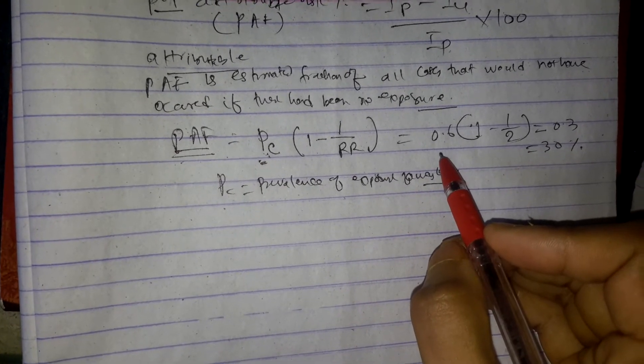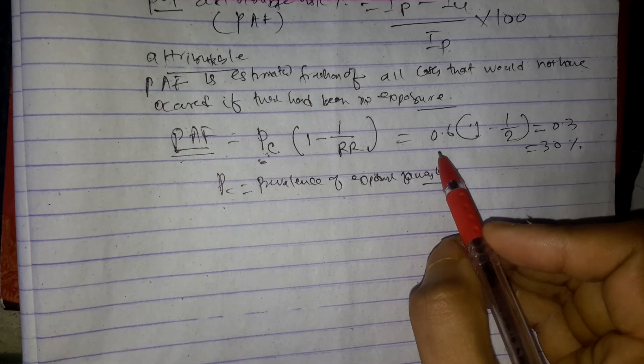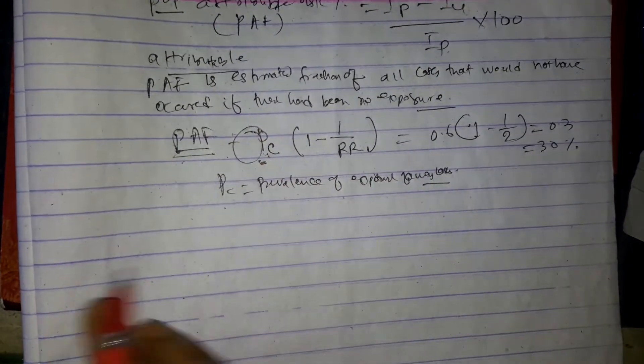Population attributable fraction depends not only on the increased risk associated with the exposure, but is also directly related to the prevalence of exposure.